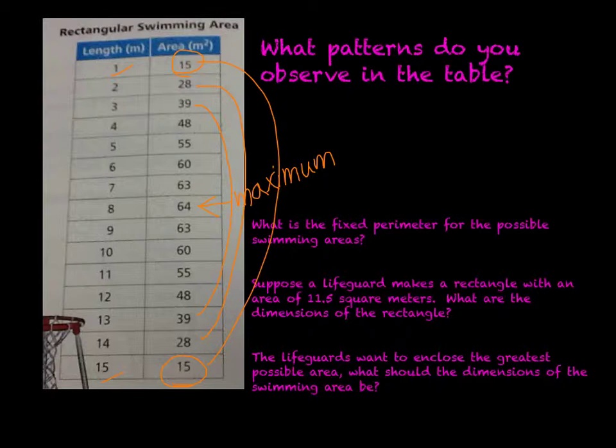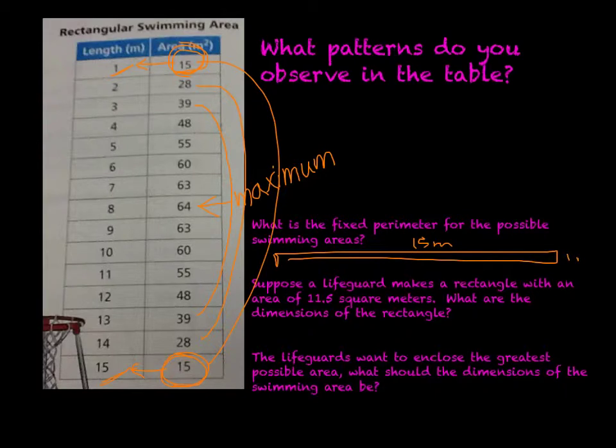First question: what is the fixed perimeter for the possible swimming areas? One way we can figure it out is to look at these rainbow arcs. Find the area that is the same in each rainbow arc, and you get a corresponding dimension. If I look at this 15, we have 15 square meters and we have 1 meter and 15 meters. There is a long, skinny rectangle, a swimming lane that's 1 meter by 15 meters. So the fixed perimeter is 1 plus 15 plus 1 plus 15, which is 32 meters.